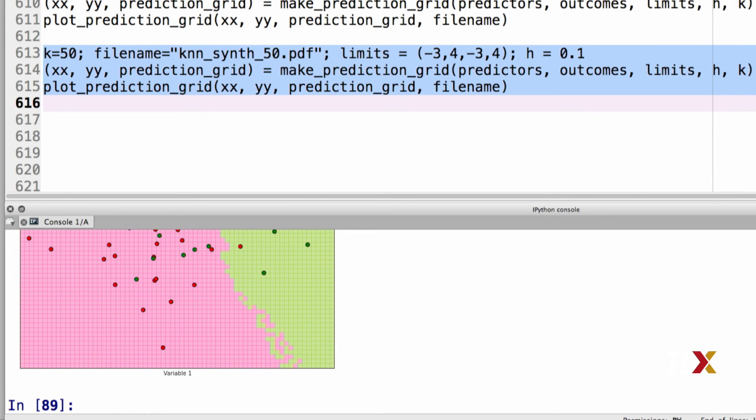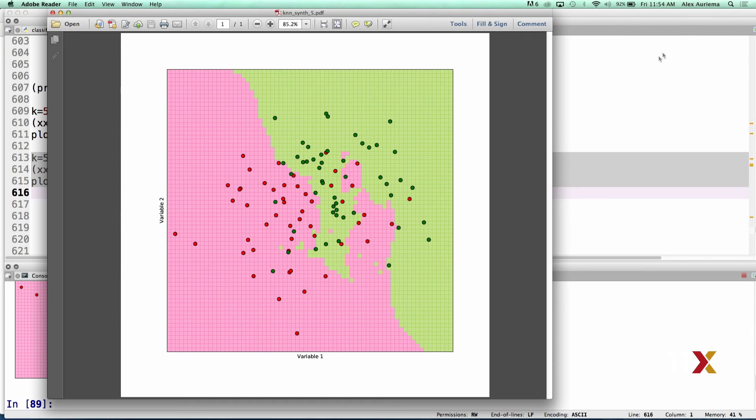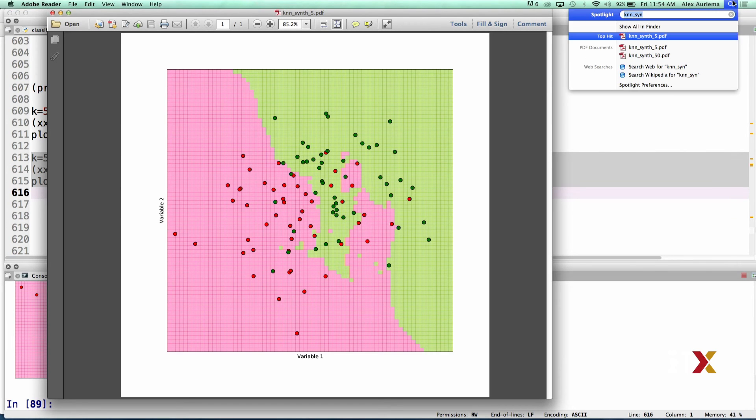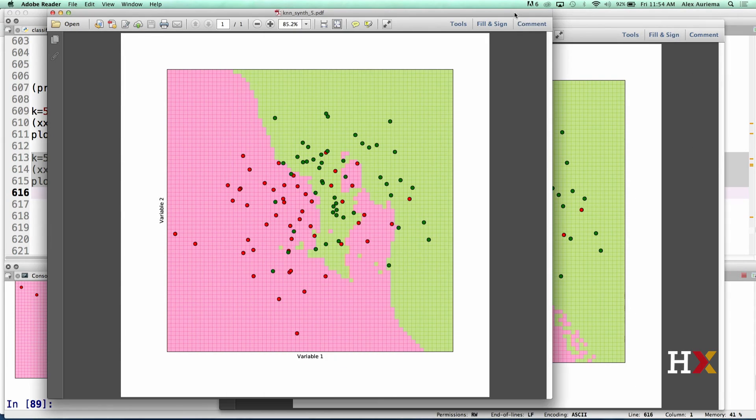We can then look for these plots on our computer. We have the 5 one here, and we'll open the 50 one as well. And we can look at these plots side by side.